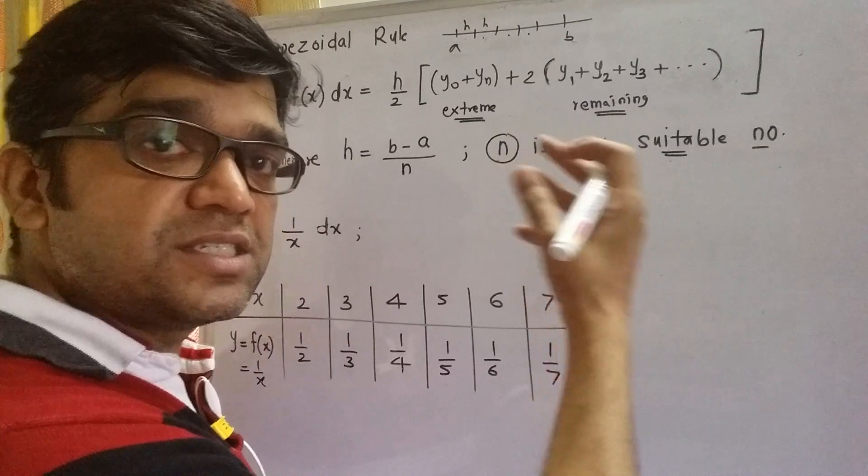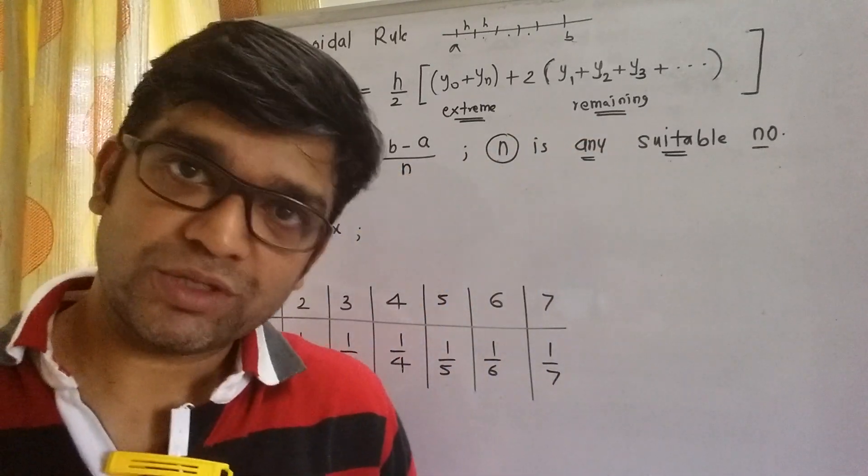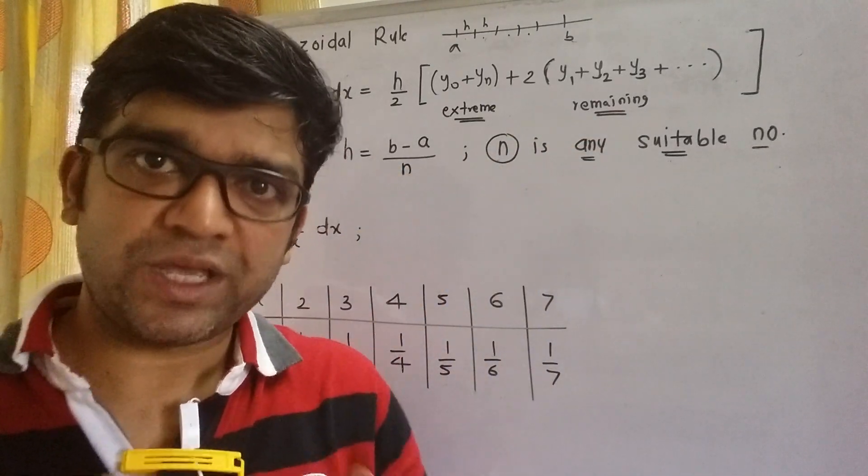If you divide into, say, seven intervals, then n is going to be seven. Generally the value of n is given to you in the problem. If it is not given, we have to make a choice.